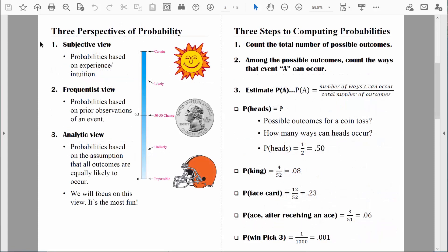All right, let's just spend a little bit of time here talking about three different viewpoints, three different perspectives of probability. And then in future videos, we'll talk at much greater length about one of these perspectives in particular. In my opinion, the simplest type of probability to understand is probability based on the subjective view. Here, we're really just talking about probabilities that are based on a person's experience or intuition.